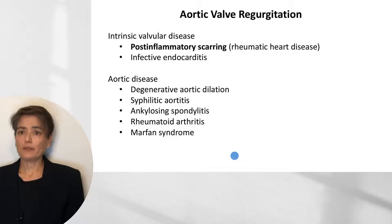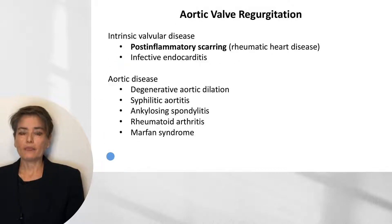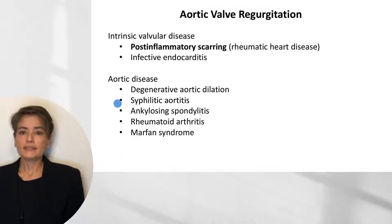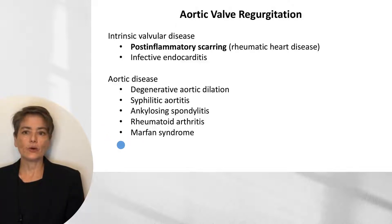When we consider aortic valve regurgitation, post-inflammatory scarring is again a cause, but we also need to consider infective endocarditis, which can cause destruction of the aortic valve. A variety of aortic diseases can also lead to regurgitation, such as degenerative aortic dilation, syphilitic aortitis, ankylosing spondylitis, rheumatoid arthritis, and Marfan syndrome. In these diseases, dilation of the aortic annulus makes the aortic valve regurgitant.